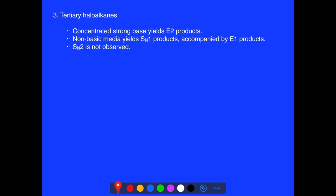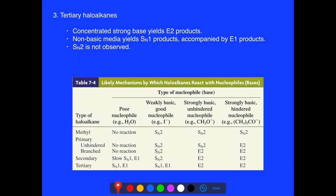Tertiary haloalkanes with concentrated base like OH⁻ or RO⁻ give E2 products. Non-basic media yields SN1 accompanied by E1 products, as we see with something like methanol. We generally don't observe SN2 with tertiary groups because the steric bulk of getting the nucleophile into that tertiary carbon is so difficult. This all summarizes the behavior of primary, secondary, and tertiary haloalkanes, and it's well represented in table 7.4 in the textbook.